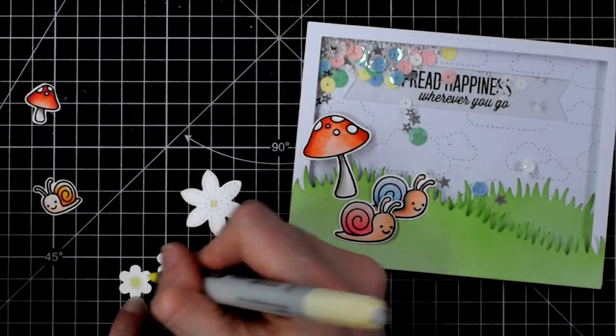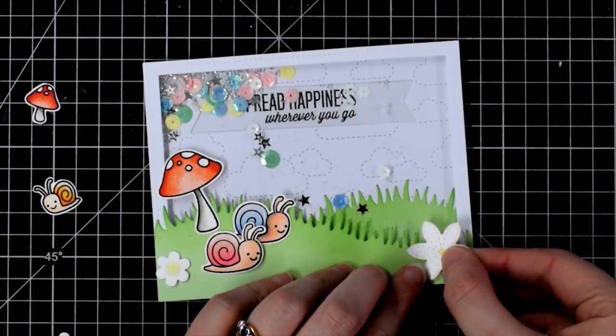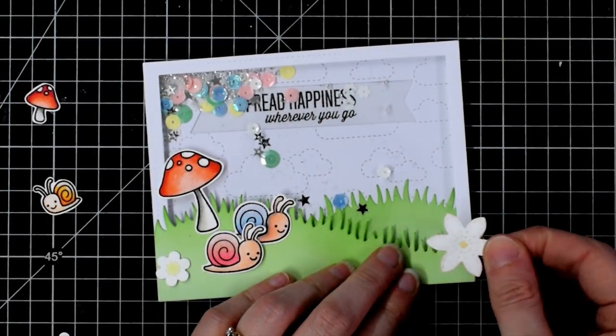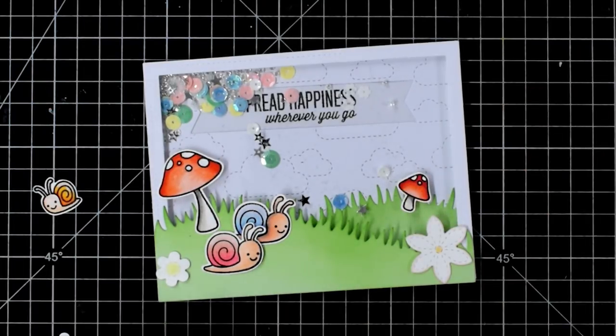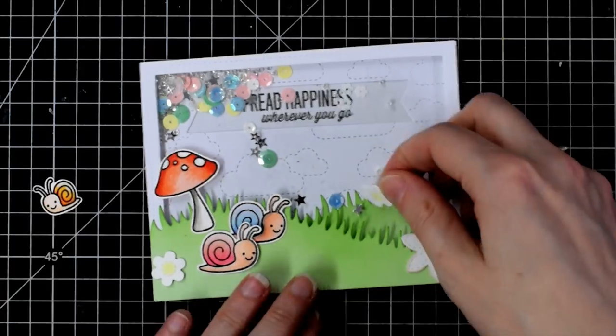Likewise I'm adding a little bit of yellow to the center and then sticking these onto my card. This bigger one I'll put over on the right just to make sure that we won't see that notch in the far back grassy hillside.